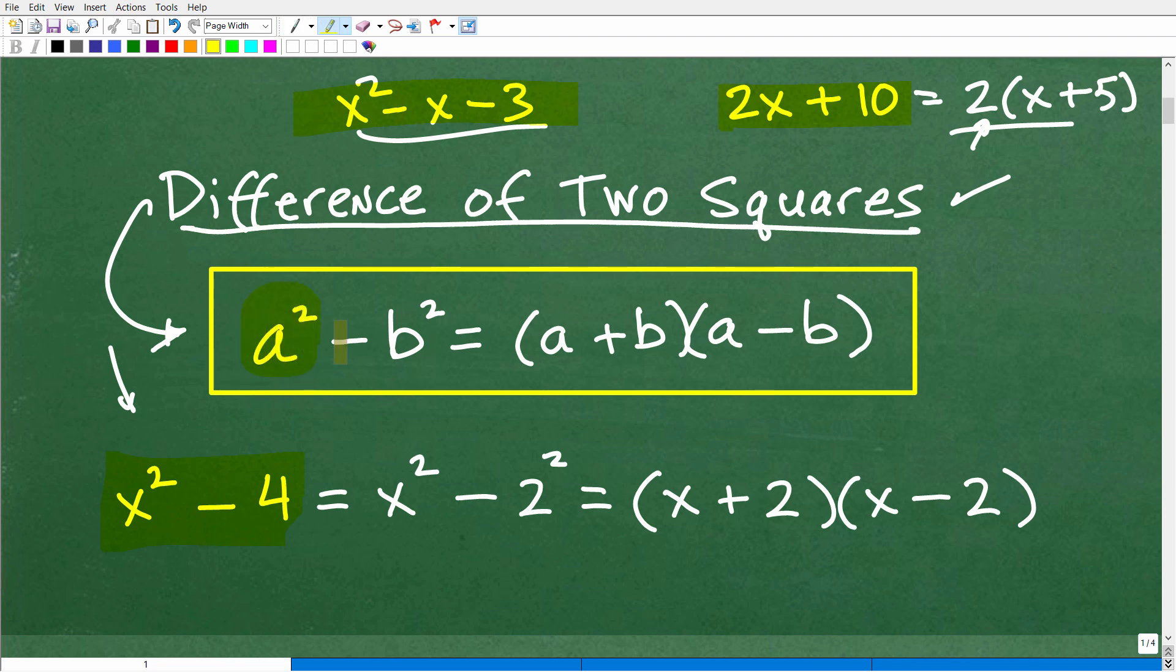a squared minus b squared, right? So when you subtract two things, we call that a difference. And we're subtracting squares and specifically two squares. So that's where the name comes from. So a squared minus b squared is equal to a plus b times a minus b.